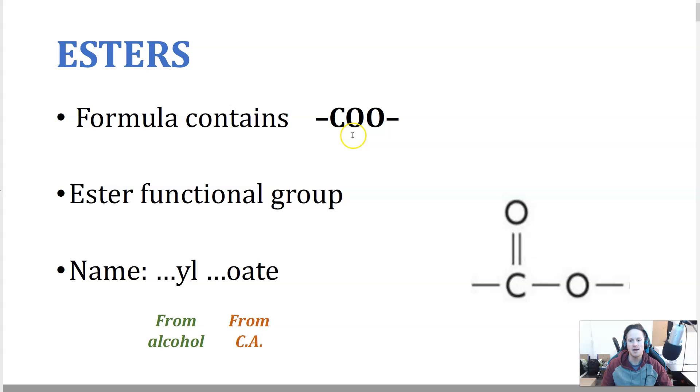So ester functional groups contain the condensed structural formula of COO and this is how it looks in the extended structural formula. You've got a C=O carbonyl and an oxygen attached and you've got two hydrocarbon side chains coming off. So this is a non-terminal functional group, it's in the middle of a molecule.